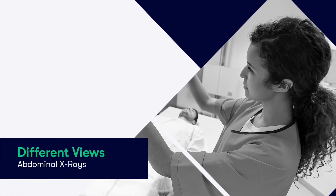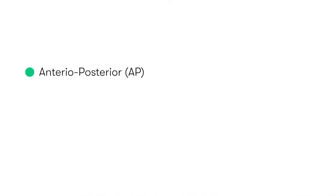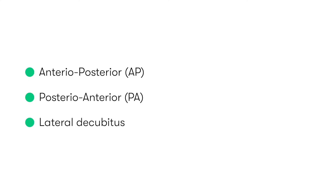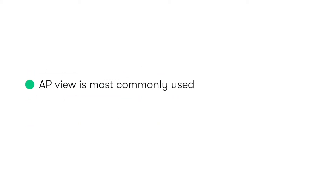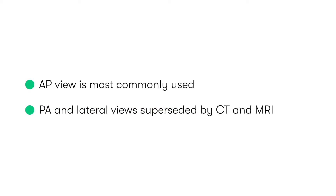When we perform abdominal x-rays, there are three views that we tend to use: the anterior-posterior view, or AP; the posterior-anterior view, or PA; and finally the lateral decubitus view. By far and away, the most common view we obtain is the AP view, and the PA and lateral views have become pretty rare, especially with the increased accessibility of more advanced imaging modalities like CT and MRI. But it's still important that you have a good understanding of each of the three techniques.